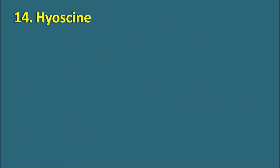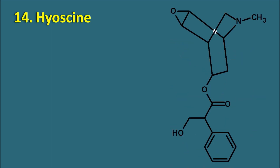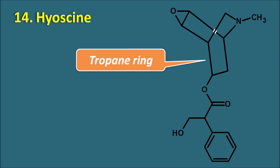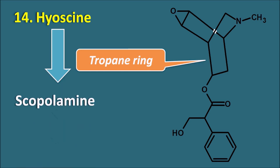The fourteenth one is hyoscine. Hyoscine is a natural alkaloid from the tropane plants having a bicyclic ring system called the tropane ring, which has an epoxide bridge at the sixth and seventh position. Hyoscine can also be called as scopolamine. Scopolamine is an alternative name for hyoscine. Hyoscine is used in the treatment of motion sickness — it can inhibit nausea and vomiting caused by movement.